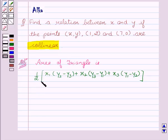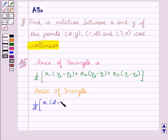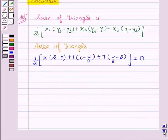Therefore, now we will find the area of the triangle using the three points (x, y), (1, 2), and (7, 0). So, area of triangle, that is 1 by 2 into x1 is x, (2 minus 0) plus 1 (0 minus y) plus 7 (y minus 2) equal to 0.